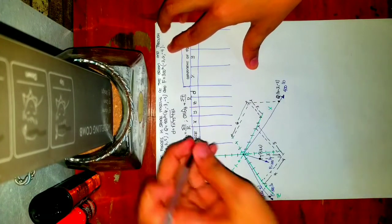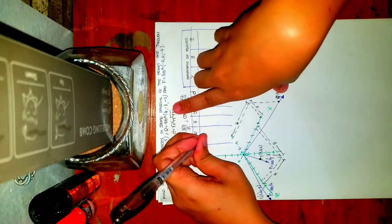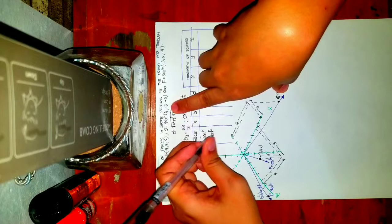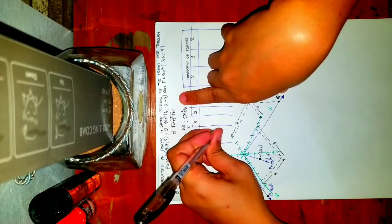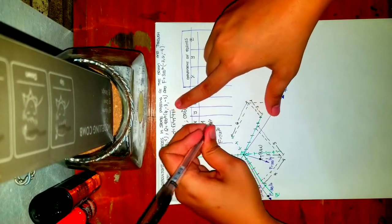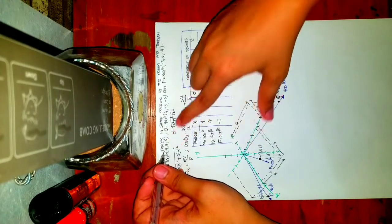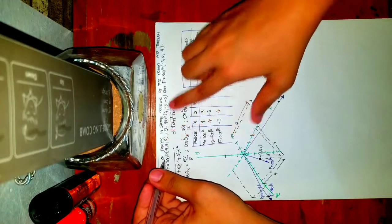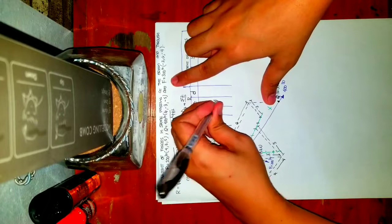We have force P = 200 lb, force Q = 400 lb, and force F = 300 lb. Their X coordinates are 4, 6, and -3 respectively. Their Y coordinates are 3, -3, and 6. And their Z coordinates are 5, -5, and -4.